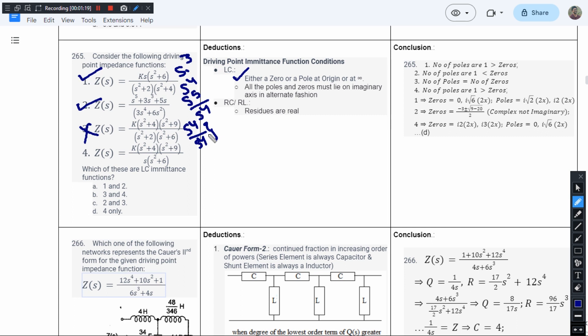So this condition violates it. And fourth says in the numerator we have s⁴ and in the denominator s³, so this could also be the answer. So let us check the next point: all the poles and zeros must lie on the imaginary axis in alternate fashion.